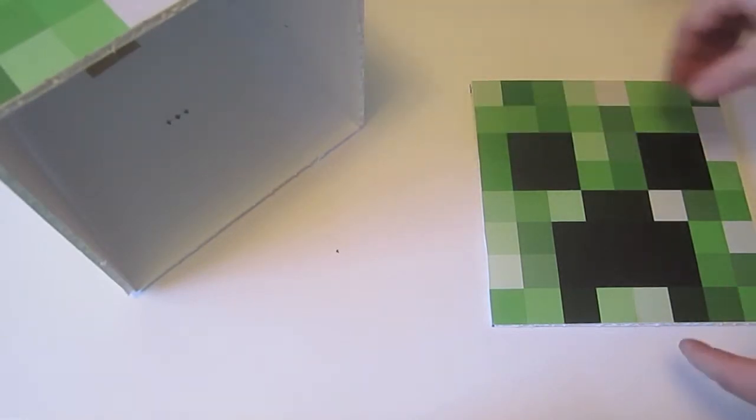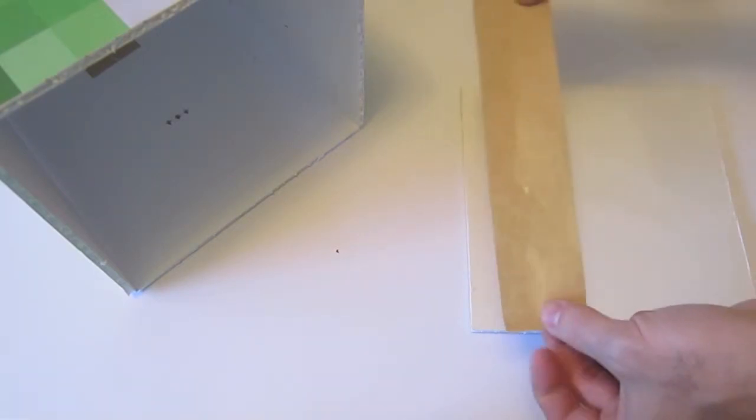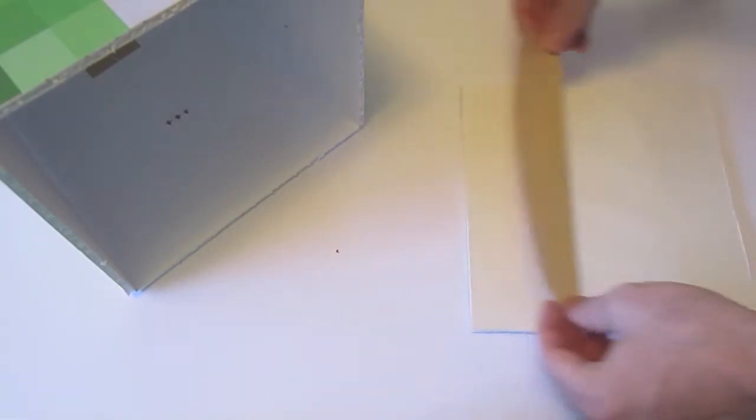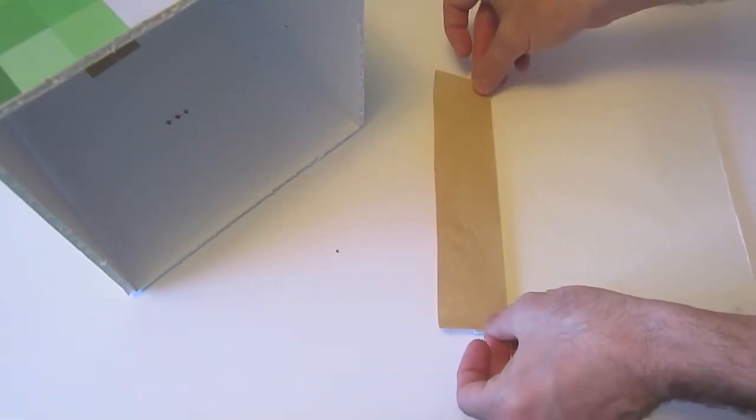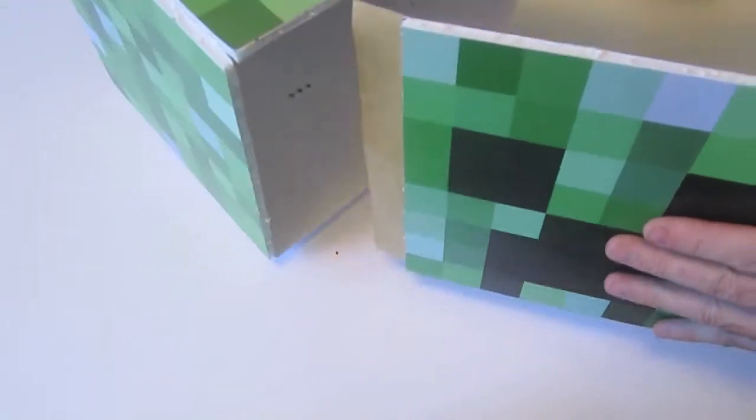I'm going to take this eight-inch piece of tape. I'm going to put half of it on our creeper face, so that's lined up. Now you can see we've got the other half of this tape right here, and this is just going to go in right inside there.